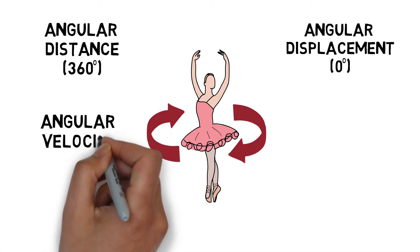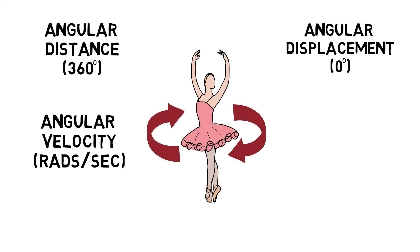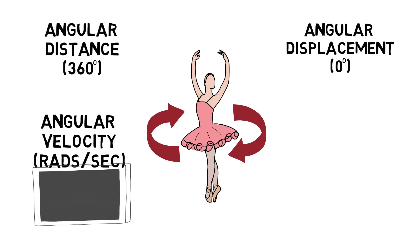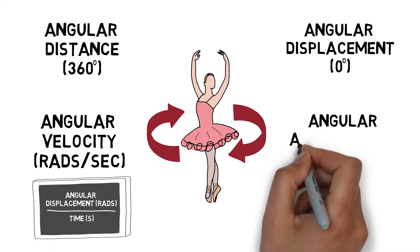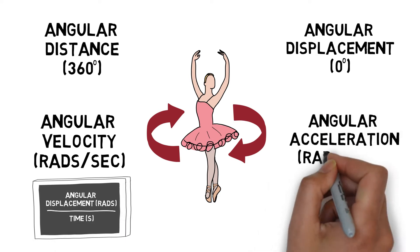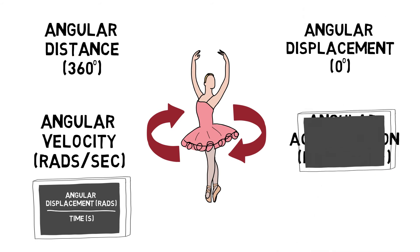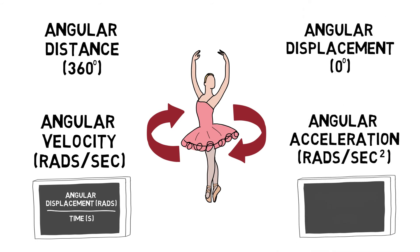Angular velocity is the rate of change of angular displacement or the rate of spin. It is measured in radians per second. Angular velocity can be calculated by taking angular displacement over time. Angular acceleration is the rate of change of angular velocity and is measured in rads per second squared. Angular acceleration can be calculated by taking angular velocity over time.